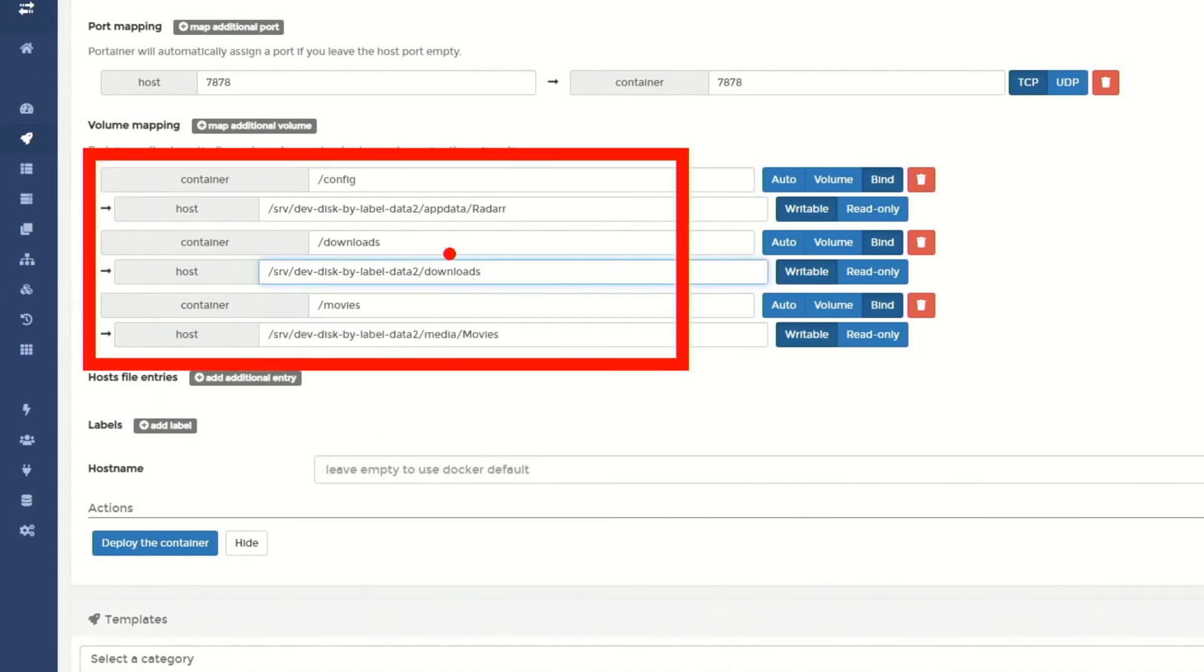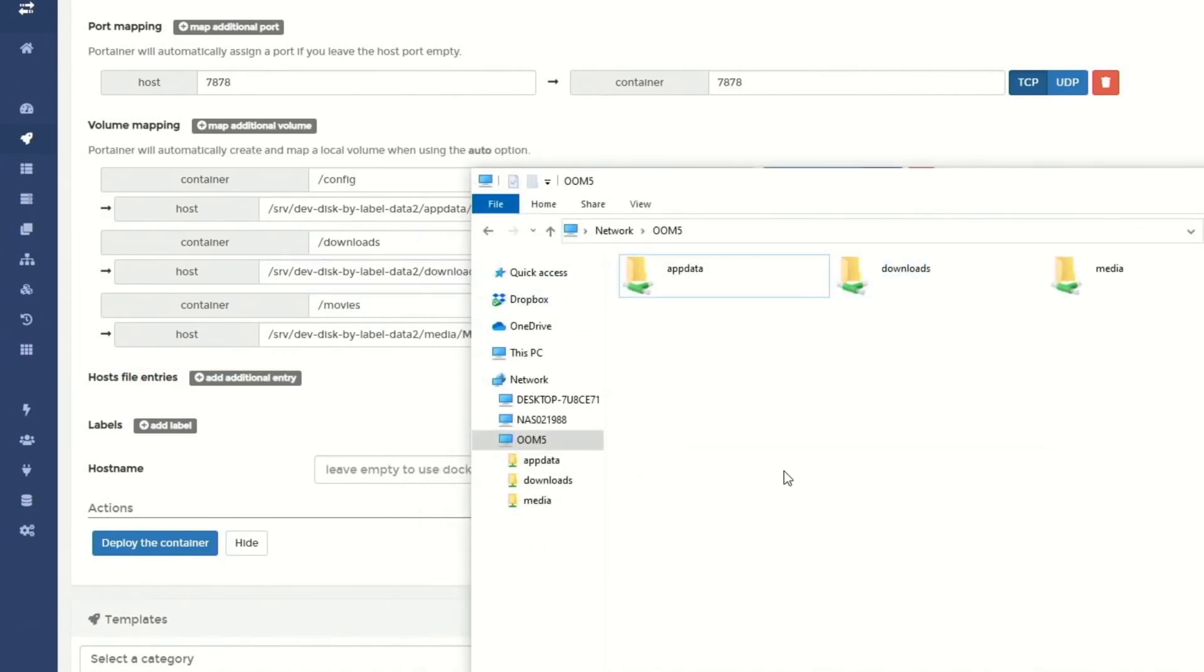So now these three things are mapped to the folders we have, AppData, Downloads, and Media. If we go back to our shared folders there, you can see AppData, Downloads, and Media.